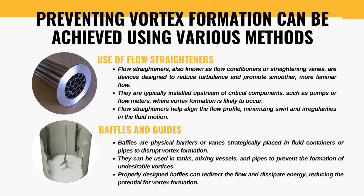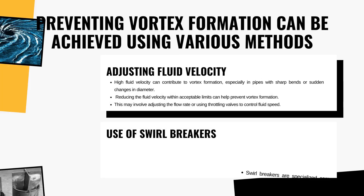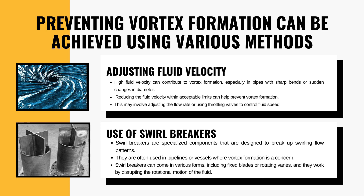Next comes the adjustment of fluid velocity. Sometimes fluid gets too excited and causes vortices, especially in tight corners. We can calm them down by adjusting the fluid velocity — it's like finding the right speed on a windy road. Adjusting the flow rate or using throttling valves to control fluid velocity within acceptable limits can help prevent vortex formation. This is one of the most fundamental ways to prevent vortex: by simply controlling fluid velocity.